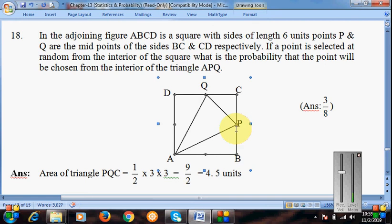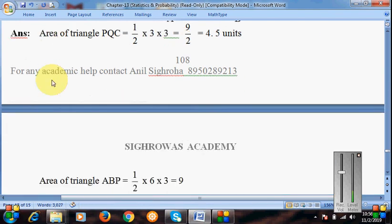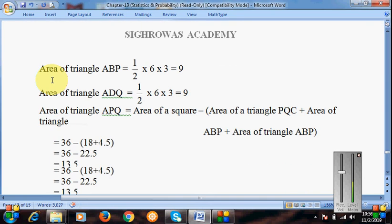And base is 3 units. So this area can be calculated. Look at some dimensions: half of 3 into 3, and we will get 4.5 square units.